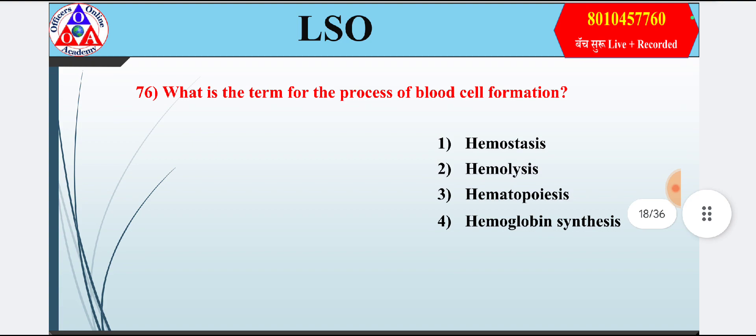Question 16: What is the term for the process of blood cell formation? Option 1: hemostasis; option 2: hemolysis; option 3: hematopoiesis; option 4: hemoglobin synthesis. Answer is option 3 — hematopoiesis.